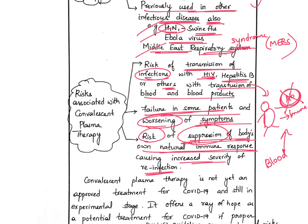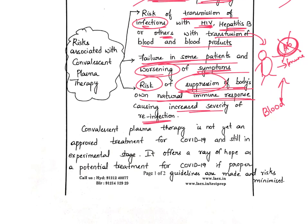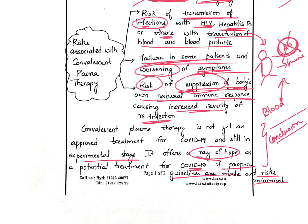The student concludes: 'Convalescent plasma therapy is not yet an approved treatment for COVID-19 and is still in the experimental stage. It offers a ray of hope as a potential treatment for COVID-19 if proper guidelines are made and risks minimized.' This is an optimistic and well-rounded conclusion summarizing the current status of the therapy in India.